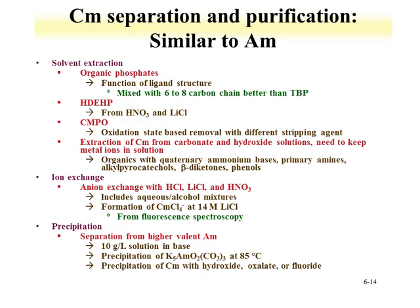Curium separations are very similar to what has been described for americium. Tributyl phosphate can be used, not at the high acid concentrations useful for plutonium and uranium, but at lower acid concentrations. HDEHP can be used in nitric and lithium chloride systems. CMPO can be used similarly to what was described for americium. Ion exchange with lithium chloride, nitric, and HCl systems exploits the formation of anionic chloride species at high lithium chloride concentrations. Precipitation, particularly separating from americium, can be achieved by precipitating the americium-5 carbonate species. Purification of curium can also be done with hydroxide, oxalates, or fluoride, similar to conditions for trivalent americium.